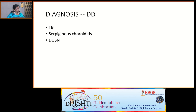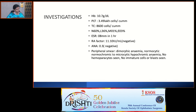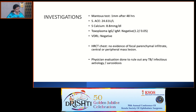We considered the possibilities of tuberculosis, serpiginous choroiditis, and also DUSN in view of the peripheral lesions with a tracking-like picture, hot disc, and vasculitis changes. We sent all basic uveitic workup investigations — nothing came back grossly positive. HRCT chest was done and physician evaluation was performed to rule out underlying TB, infectious etiology, and sarcoidosis.